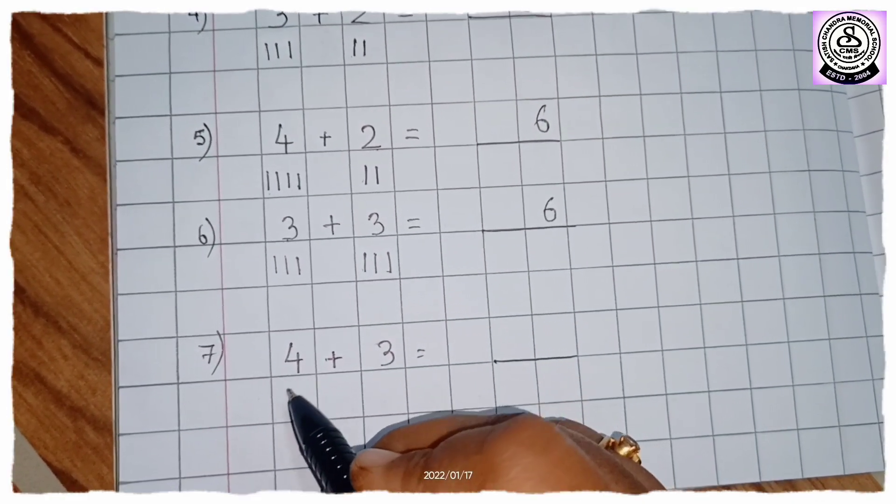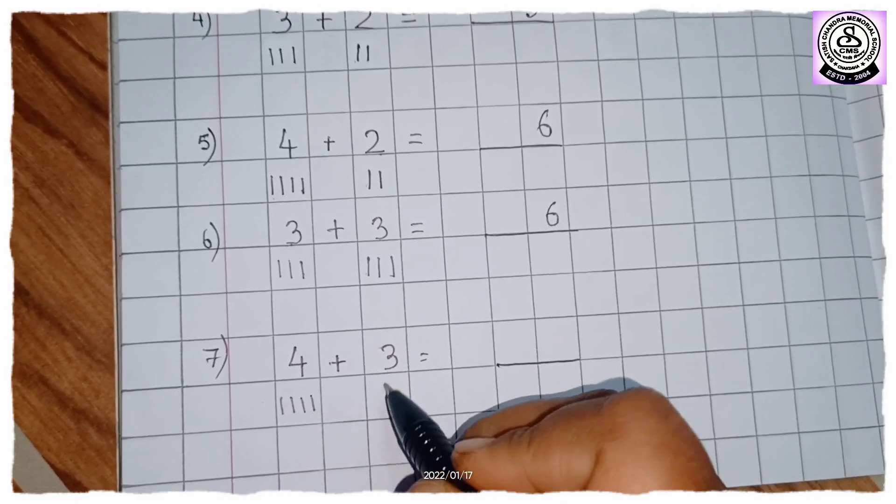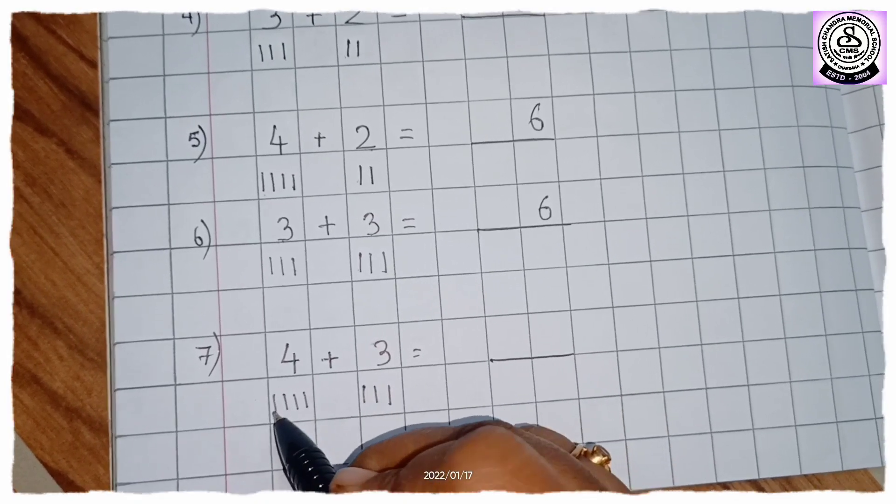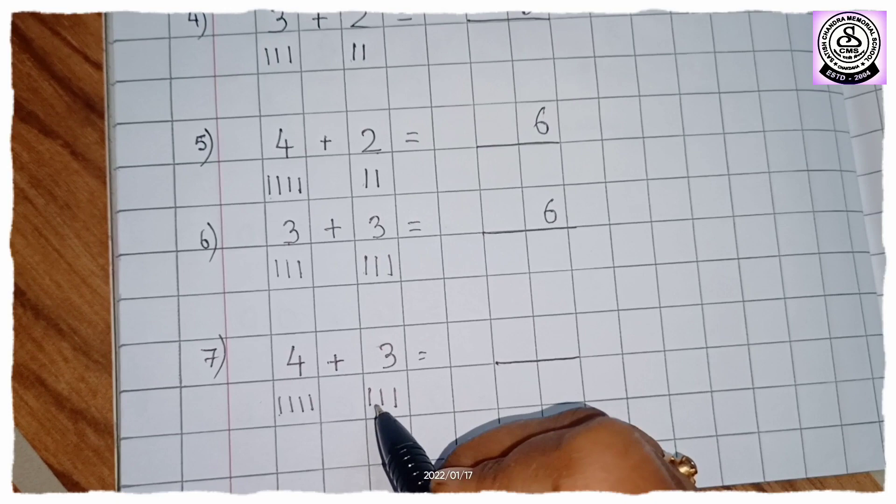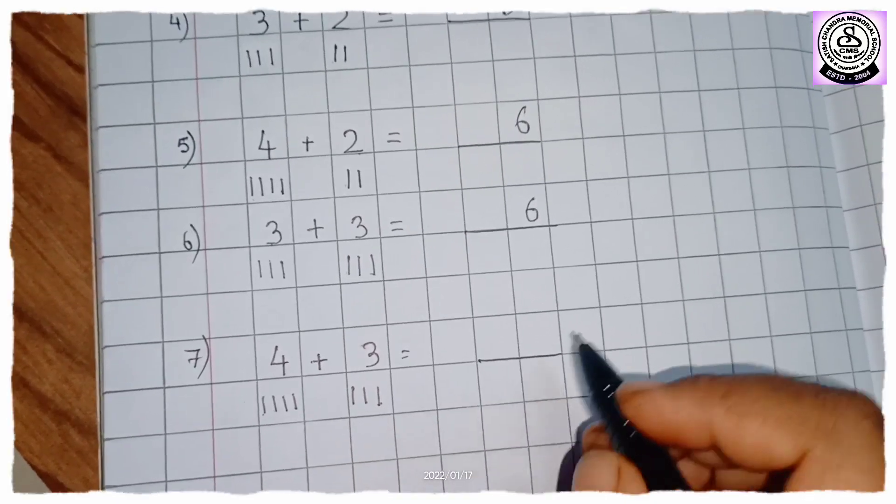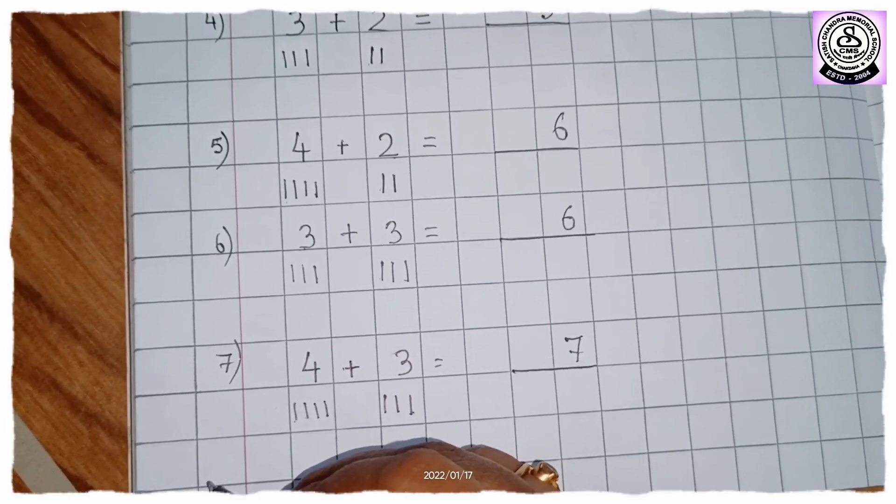Now here we will draw how many lines? 4, 1, 2, 3, 4. And here how many? 3. So 4, 5, 6, 7. So the answer is 7. So do this in your school copy. Thank you.